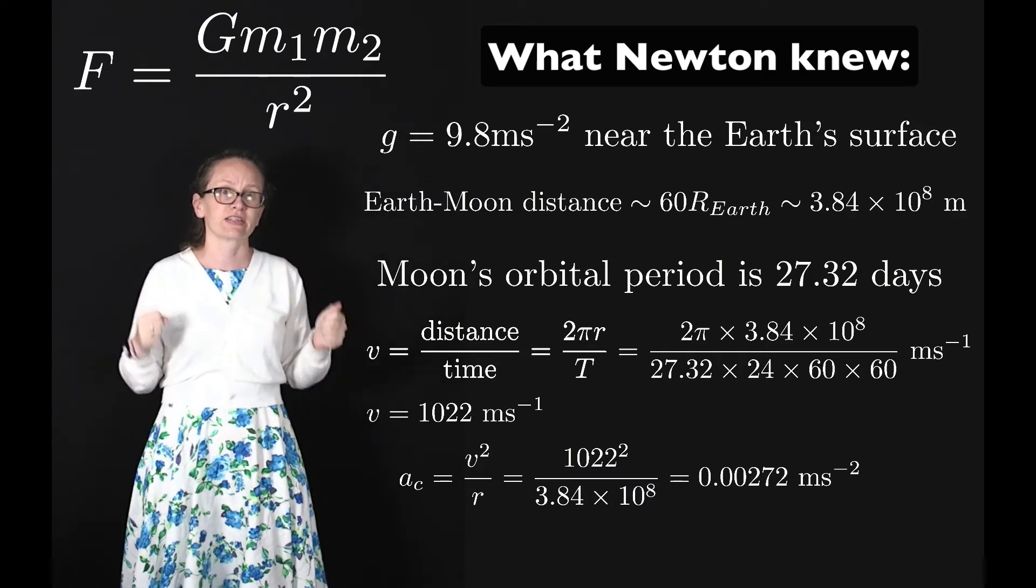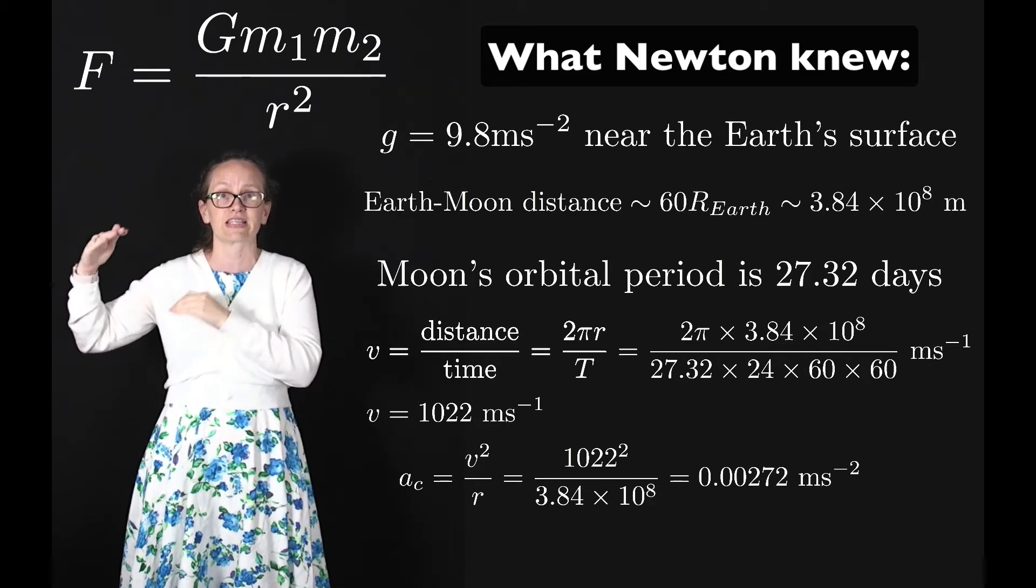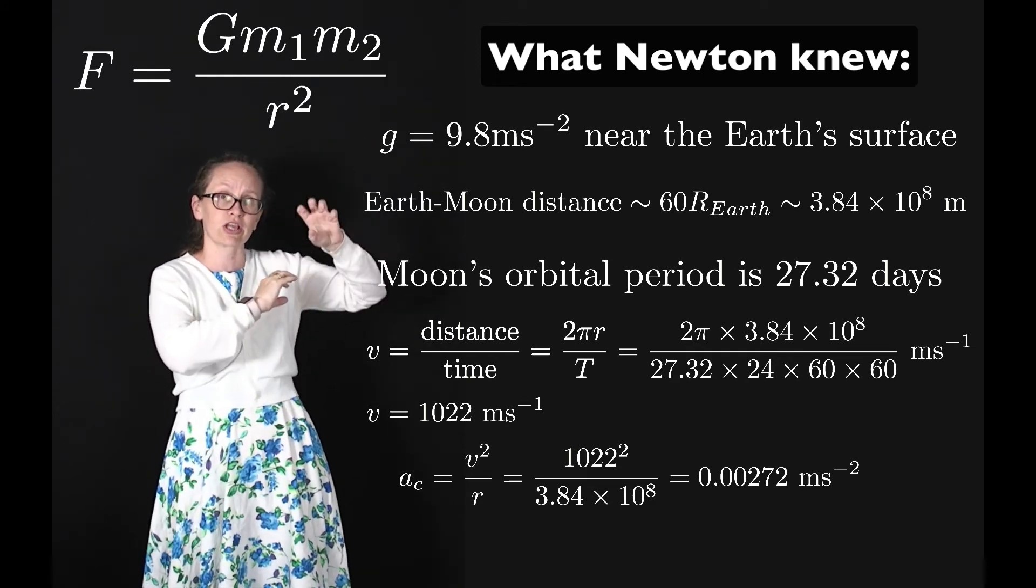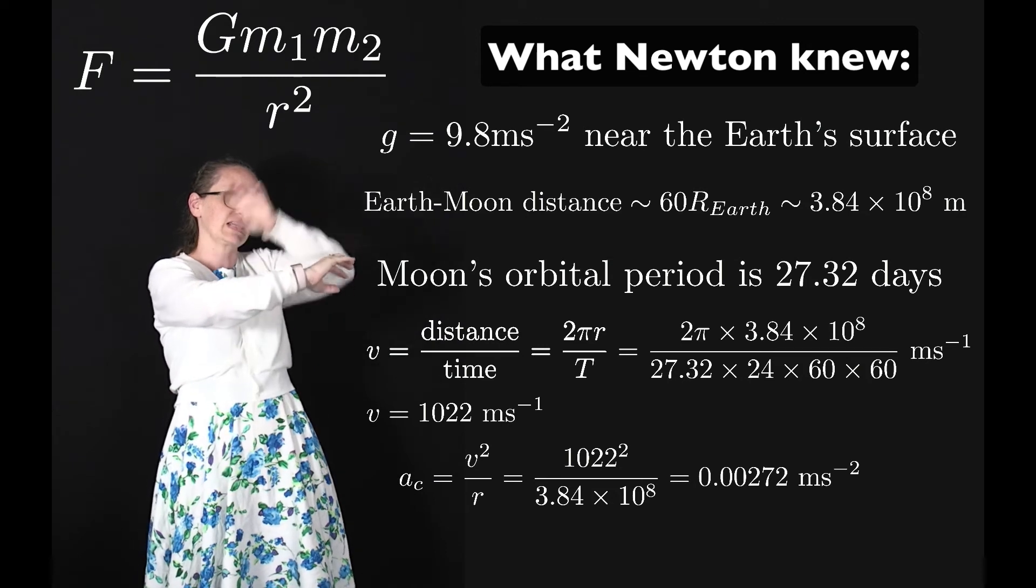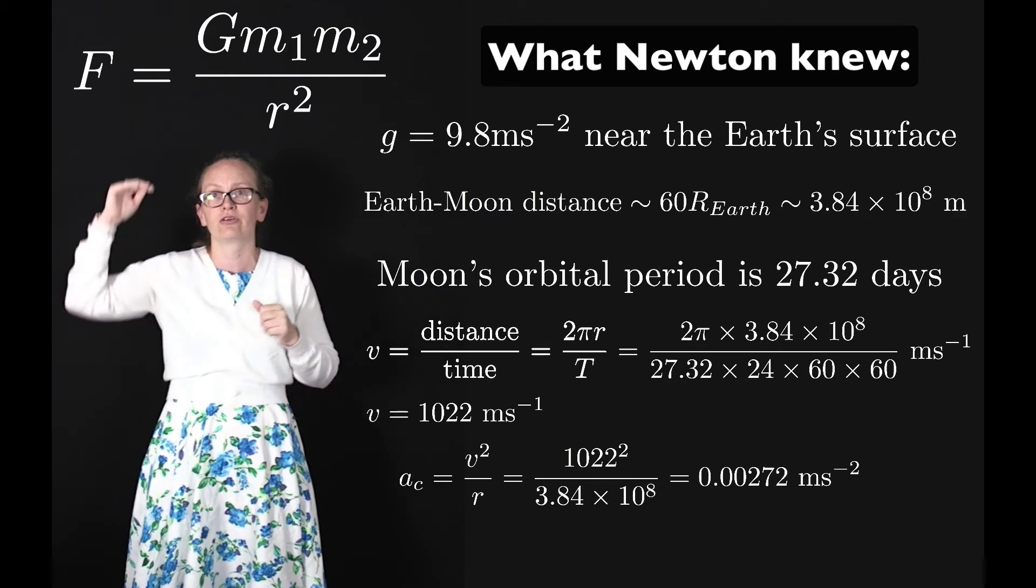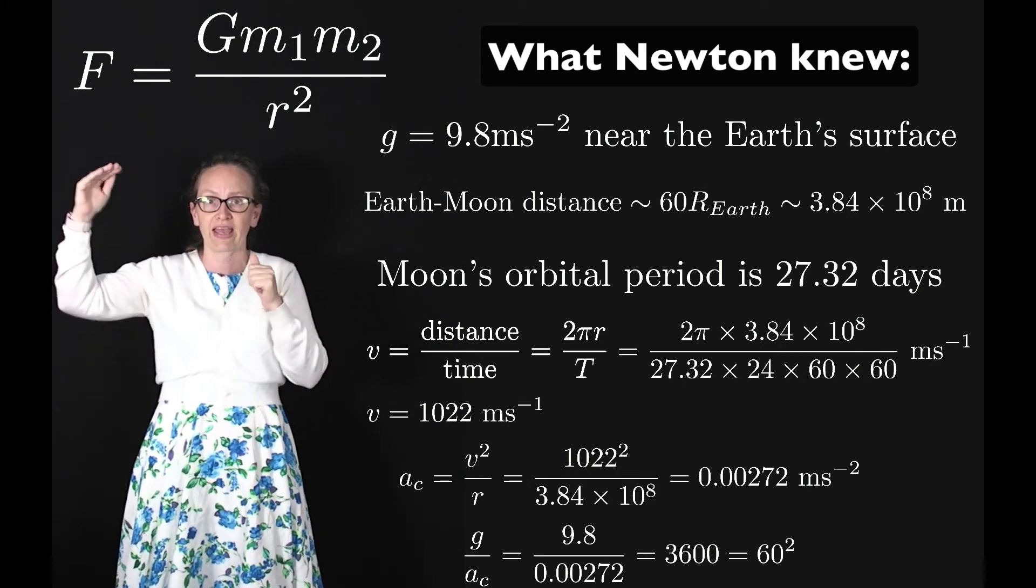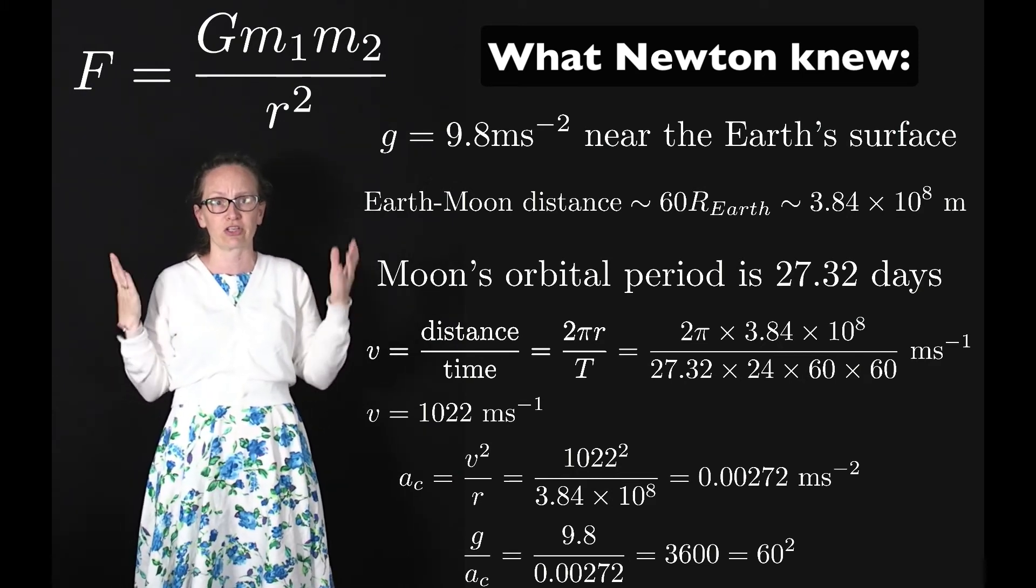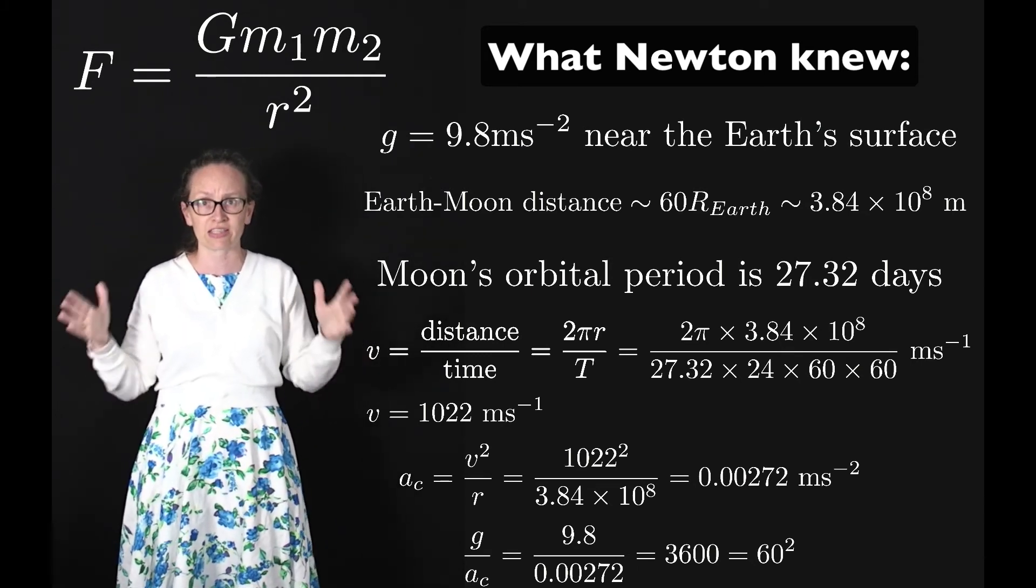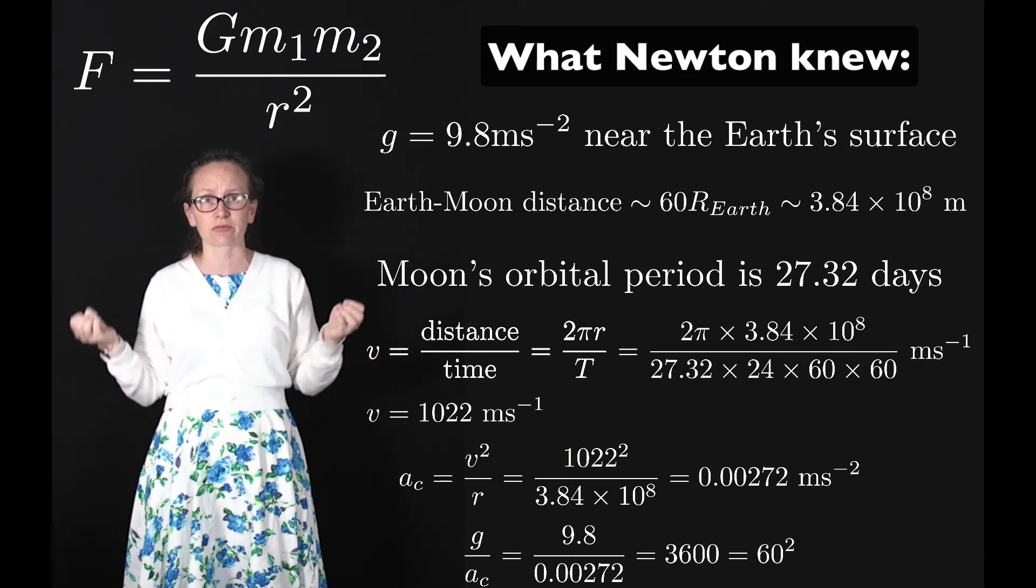The really interesting thing that Newton did was he decided to compare the rate of acceleration close to the Earth's surface to the acceleration of the Moon towards the Earth. He realized that the Moon was constantly accelerating towards the Earth as it went around this circular orbit. If we do g, the acceleration due to gravity of something close to the Earth's surface which is 9.8, divided by this centripetal acceleration of the Moon which is 0.00272, we get 3,605 which is approximately 3,600, and Newton realized that this was just 60 squared.